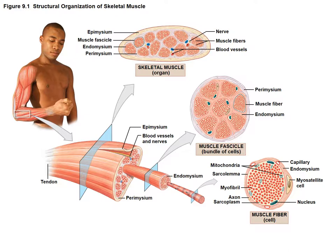Inside the endomysium, within the muscle fiber, are many myofibrils, which make up the contractile units of the actual muscle cell. Surrounding the myofibrils, inside the endomysium, is a structure called the sarcolemma — the outer covering that surrounds all of the myofibrils.